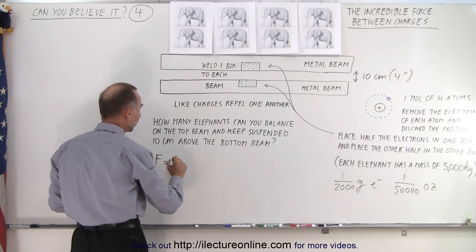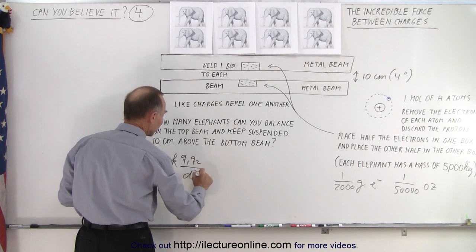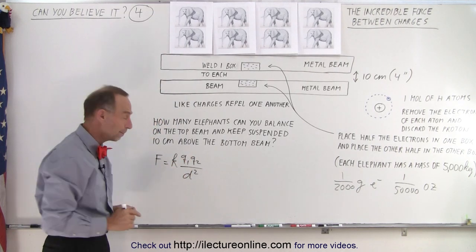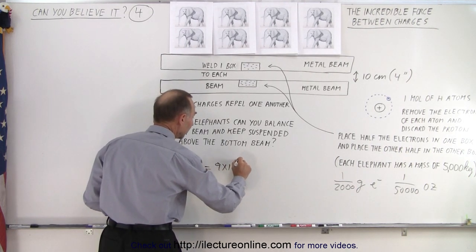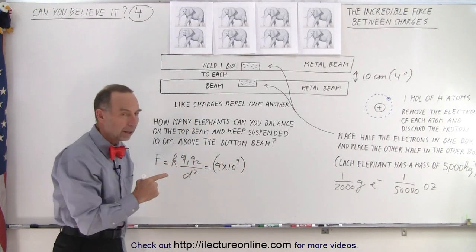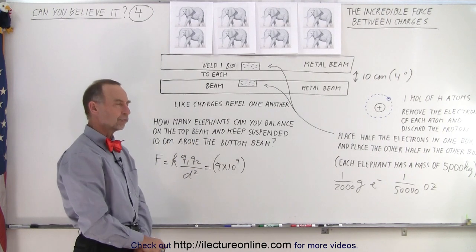The way to calculate that is to figure out the force between them. So the force is equal to k q1 q2 divided by the distance squared. Now that's known as Coulomb's Law. And k is a constant, that is nine times ten to the ninth.